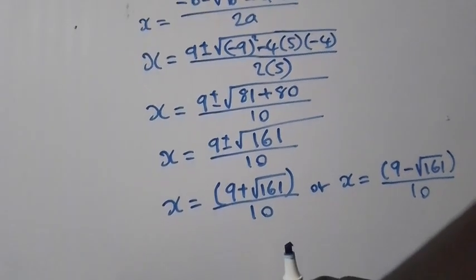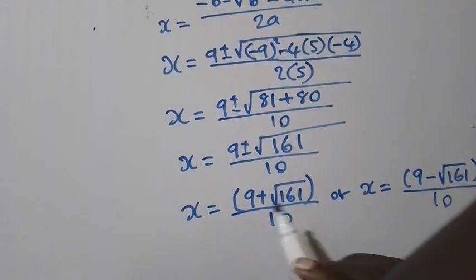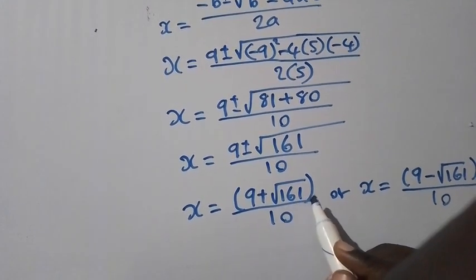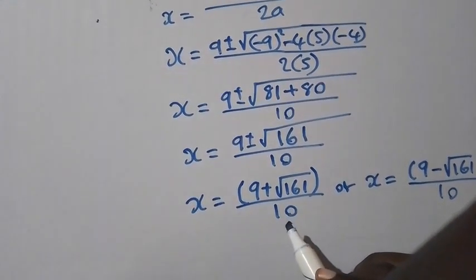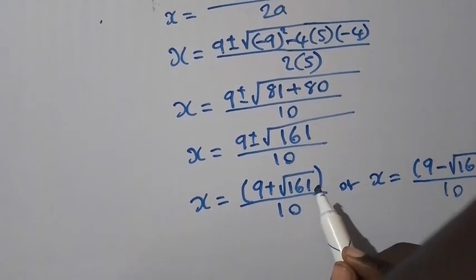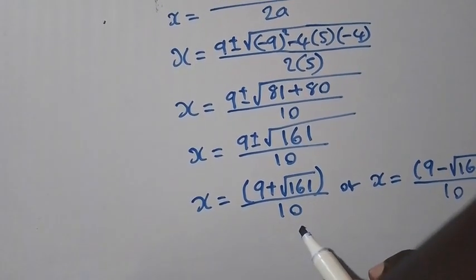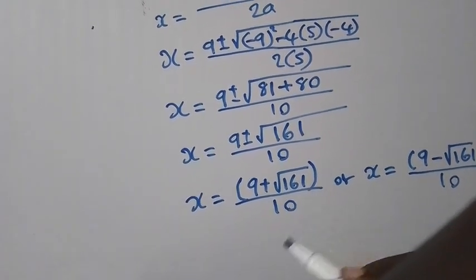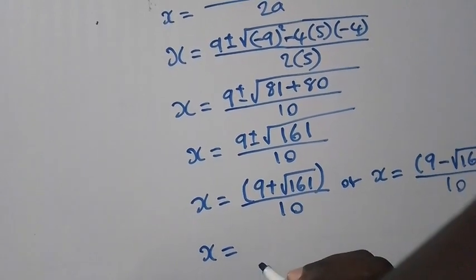So to save time, you can punch the way it is on your calculator. Open brackets, open brackets, 9 plus root 161 close brackets, it gives you answer, then you divide by 10. Take note, first you should start with the numerator, then you divide with the denominator. It's when your calculator is going to follow BODMAS. So when you do that, like if we punch this one, we are getting 2.17.